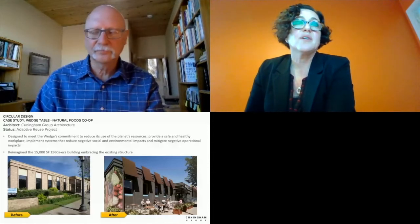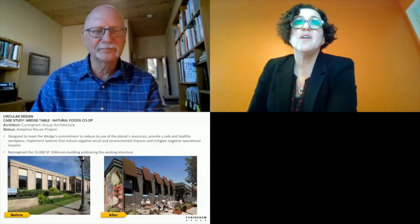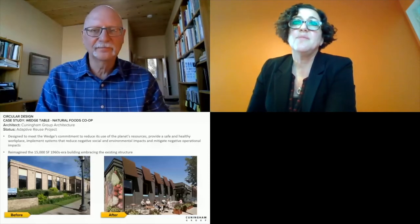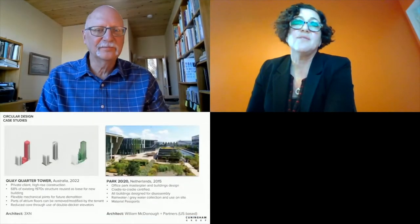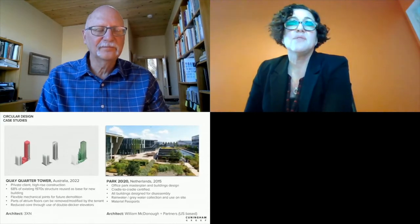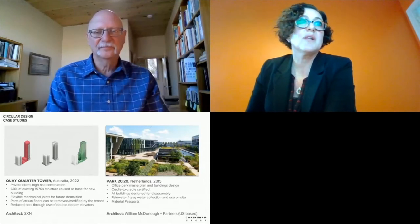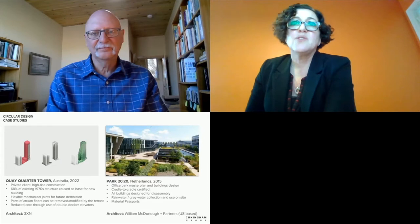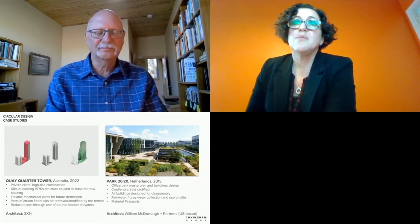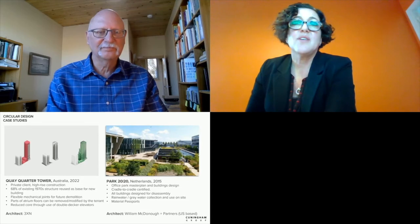Two leading examples of circular design are the Key Quarter Tower and Park 2020. The Key Tower takes a 1970s tower at the end of its design life and repurposes it using 68% of its existing structure — recladding and reshaping it while creating flexibility in its method of assembly. The Park 2020 project designed all buildings in the office park for disassembly and material recovery, with material passports allowing materials to be identified and categorized in BIM models for future upcycling.